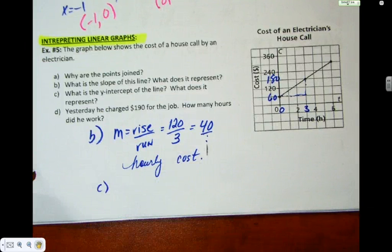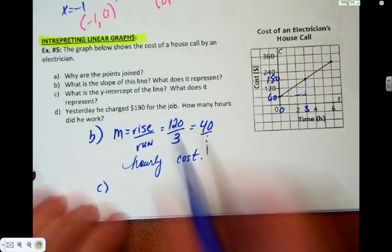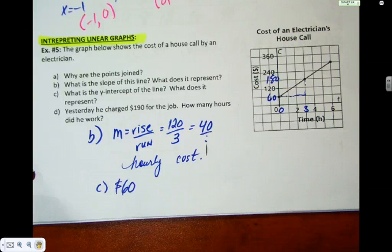C, write down the y-intercept, and tell me what it represents. Give me a value and some units. I think $60 sounds confirmed. We did this question on the last page. What does it represent? Flat fee, flat rate, cost before he works, cost when he arrives, what you have to pay for no work, whatever makes sense to you. Do you understand the difference between what the slope represents and what the y-intercept represents? So slope is the cost per hour, y-intercept is the flat cost, doesn't matter the hours.